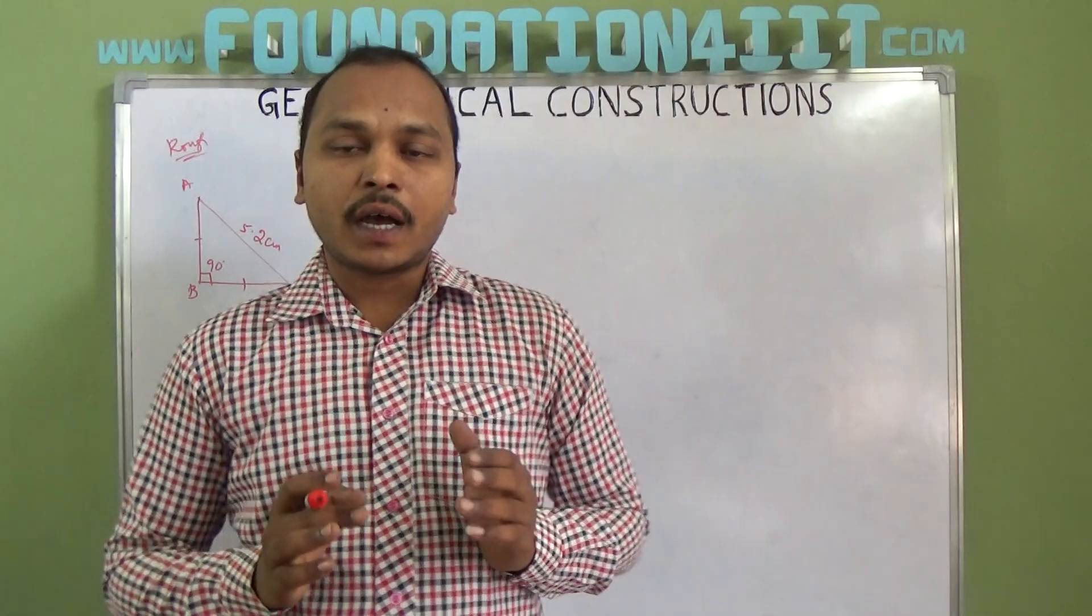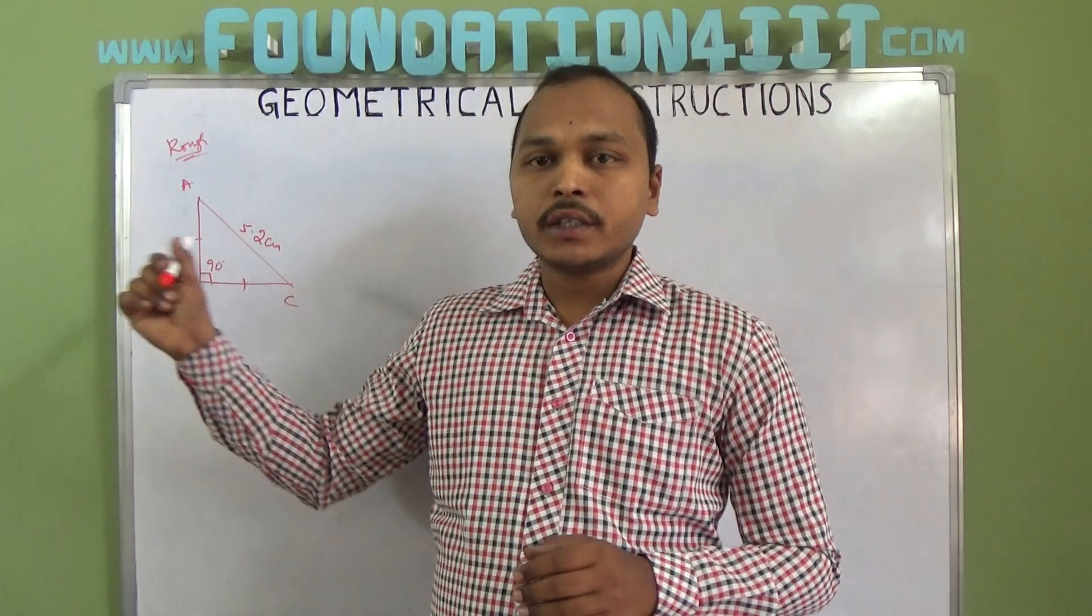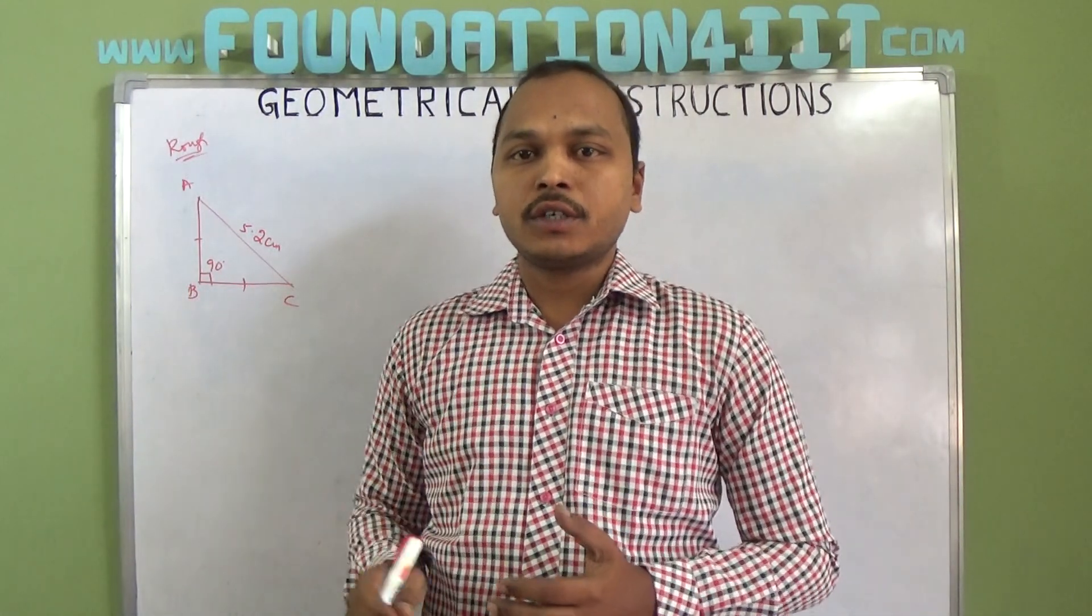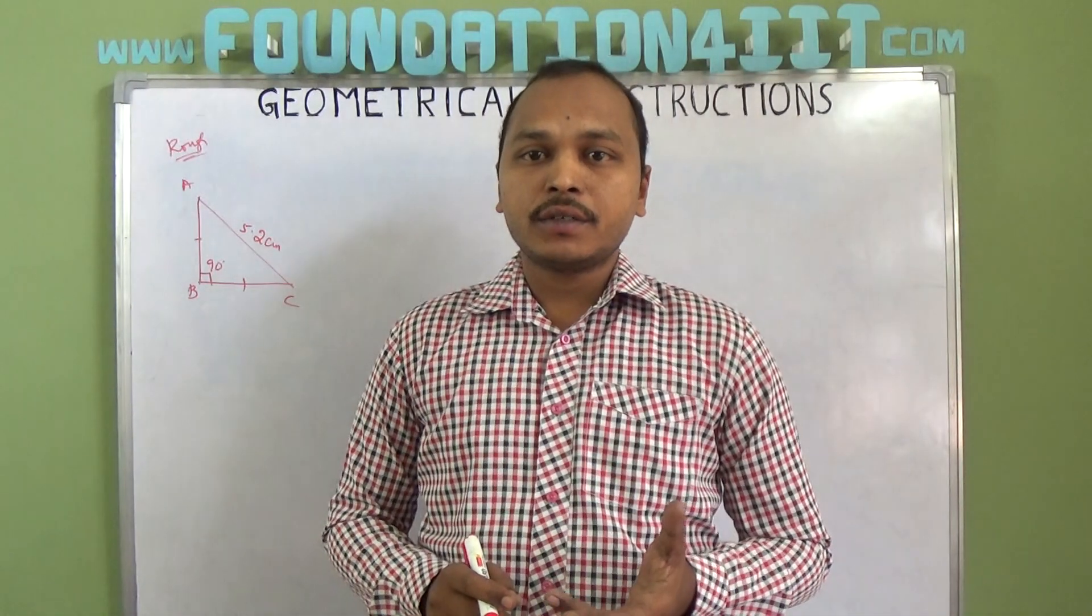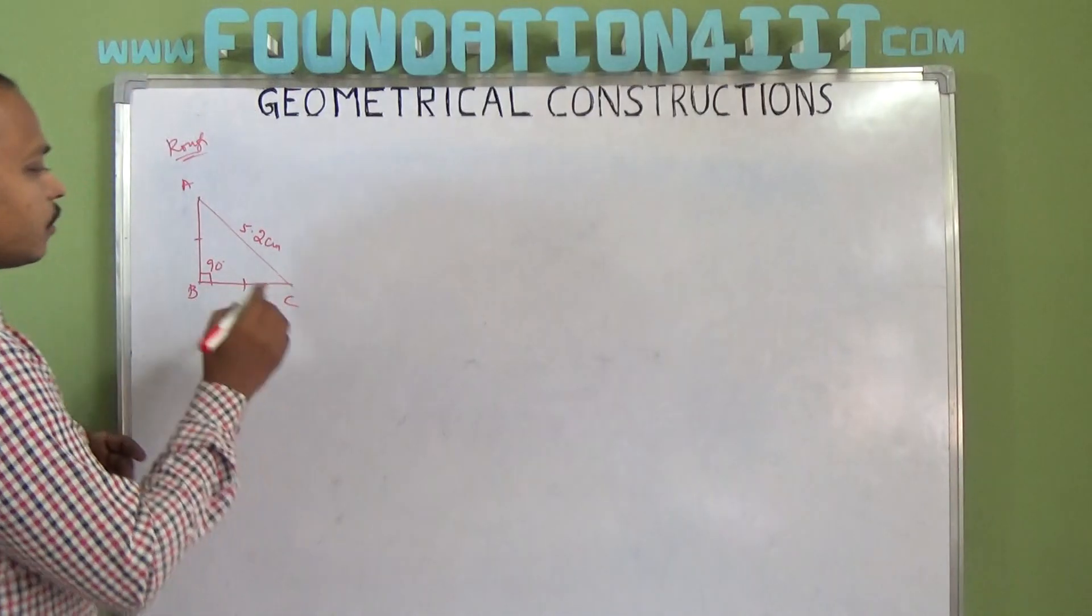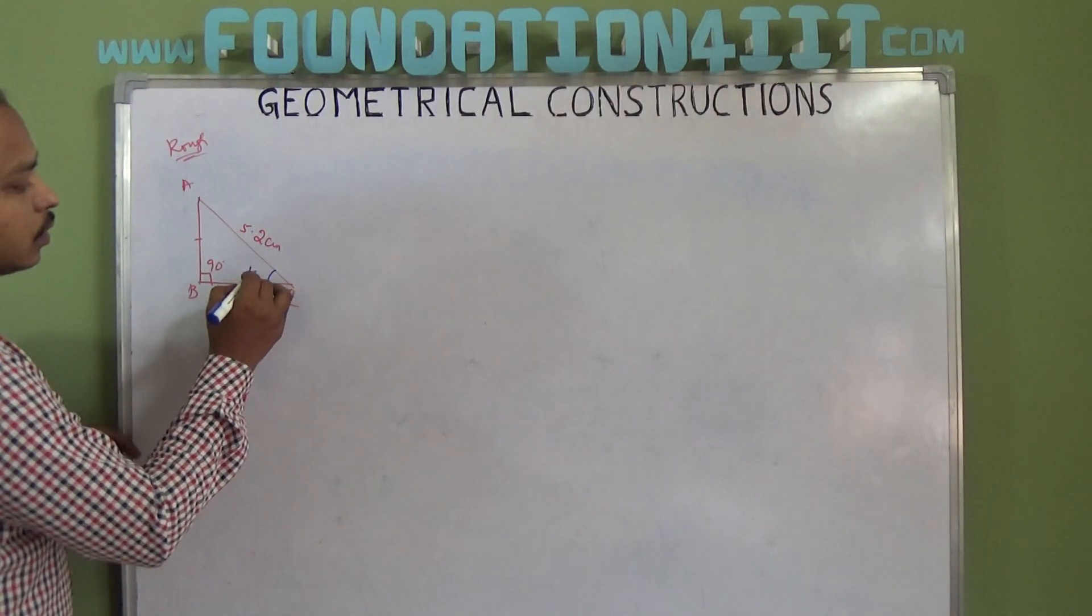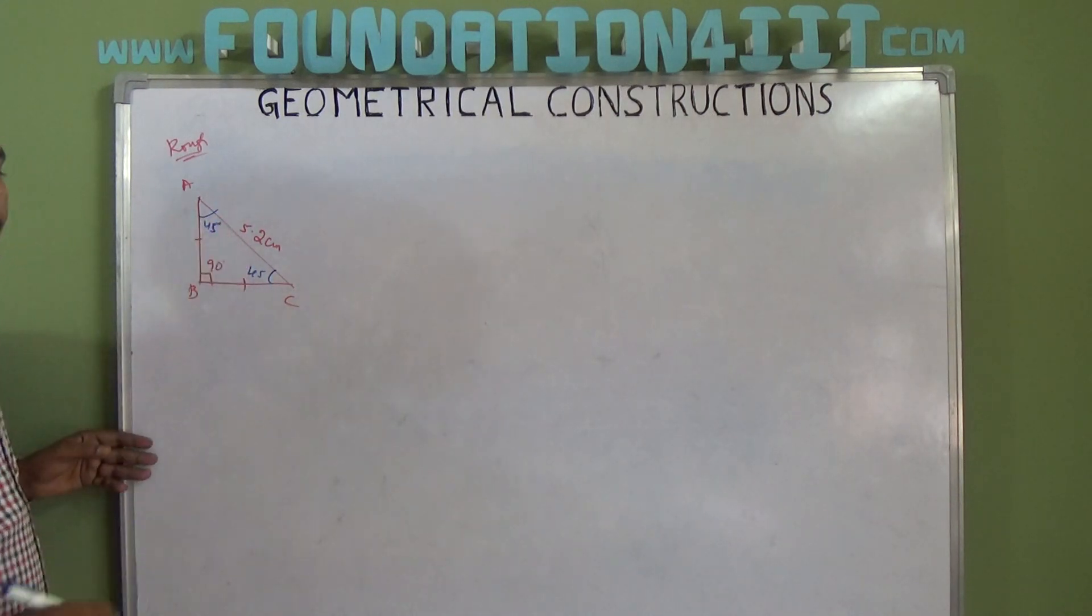So we know sum of the angles in a triangle is 180 degrees. One angle is 90. Other two angles must be equal because two sides are equal, so opposite angles are also equal. So sum of the other two angles is 90. So 90 divided by 2 is 45. That means the other two angles are 45 and 45.